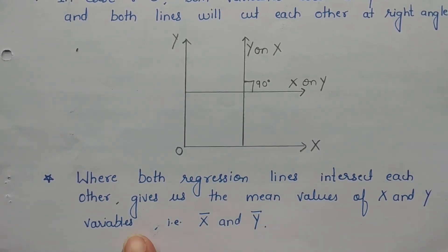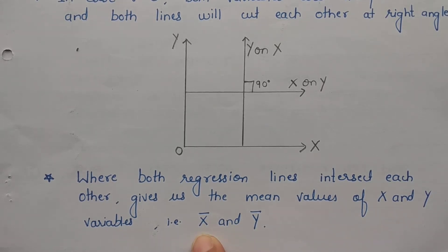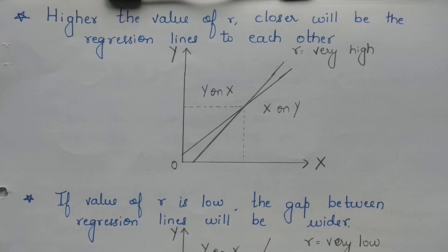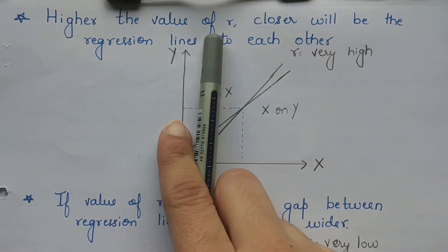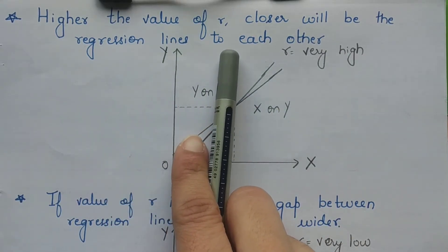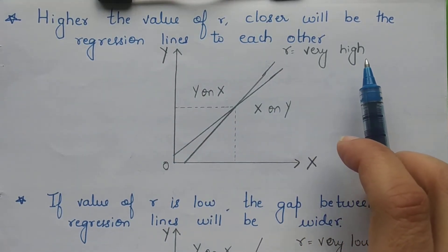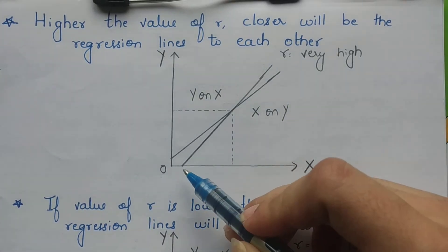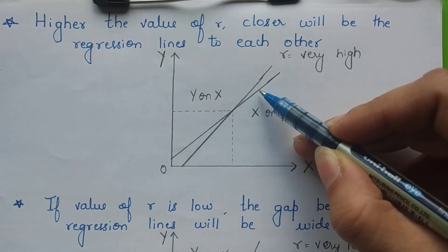The point where the two regression lines meet gives us the mean values of x and y variables — that is, x-mean and y-mean. Now, if your correlation value is very high — for example r equals 0.8 or 0.9 — then your regression lines will be very close to each other. The gap between y on x and x on y will be very narrow.